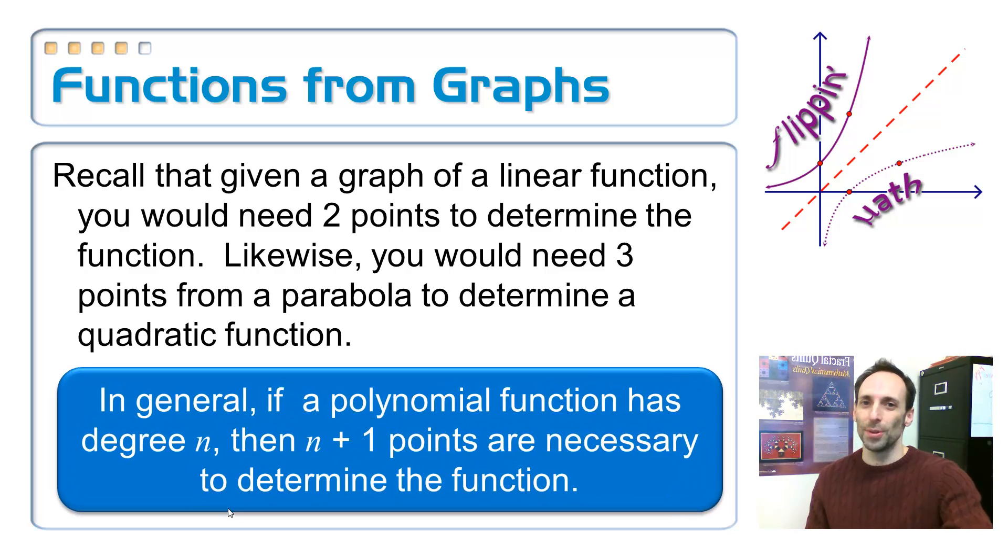Well, that was way slower than it needed to be. Very dramatic, though. So in general, if a polynomial function has degree n, then that means you need n plus 1 points in order to come up with the equation. So if our degree is 2, 2 plus 1, I need 3 points to get it. Now we might be doing a cubic. Cubic is degree 3, 3 plus 1, I need 4 points in order to come up with the equation for that thing.